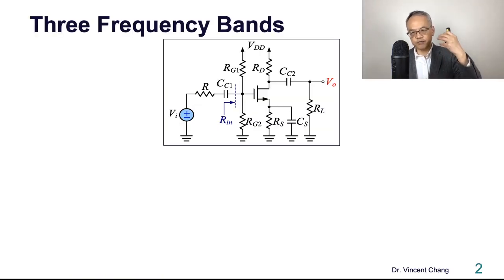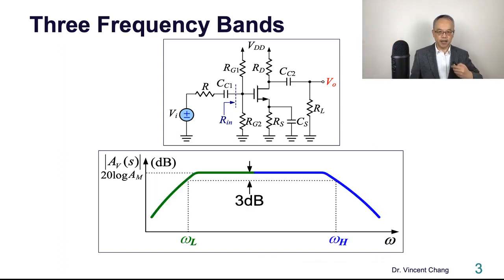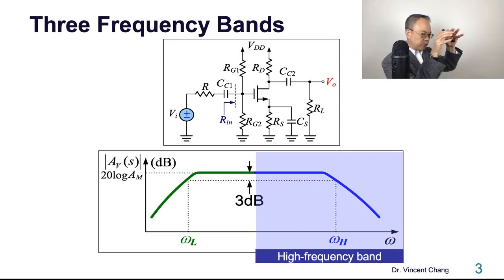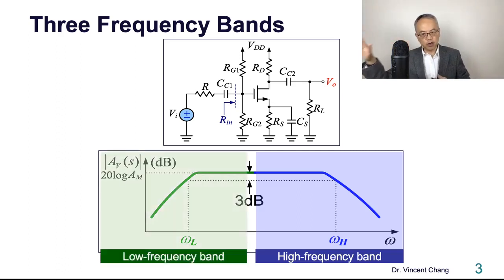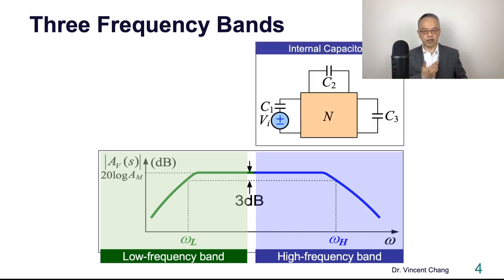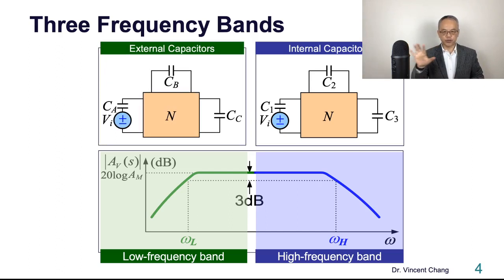Let's quickly review the concept of the three frequency bands. Here's the common source amplifier. AM is the so-called mid-band voltage gain. Moving toward the high frequency range, the gain will fall. On the low frequency side, the gain will decay. The definition of the three decibel bandwidth is the difference between the upper three decibel frequency omega H and the lower three decibel frequency omega L. High frequency behavior is dominated by the internal resistance-capacitance of the semiconductor device, while low frequency behavior is affected by external elements like coupling and bypass capacitors.